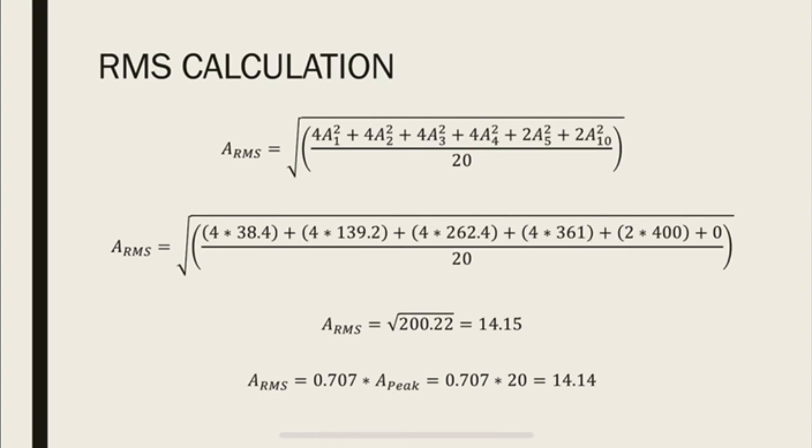So we plug in all the values in our RMS equation and then finally compute the value to be 14.15. And for a sine wave, there is a relation between the RMS and the peak amplitude, which is RMS value is 0.707 times the peak. And that gives a value very close to our calculated value.